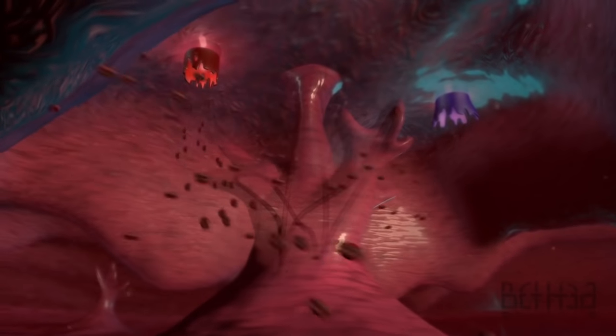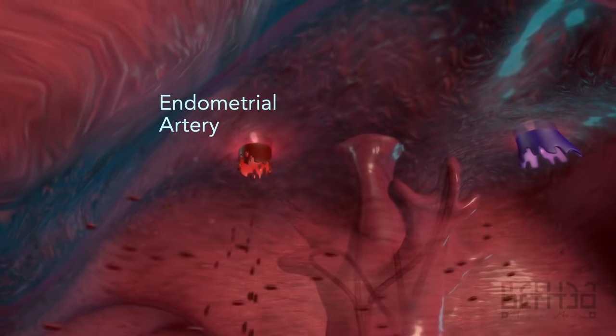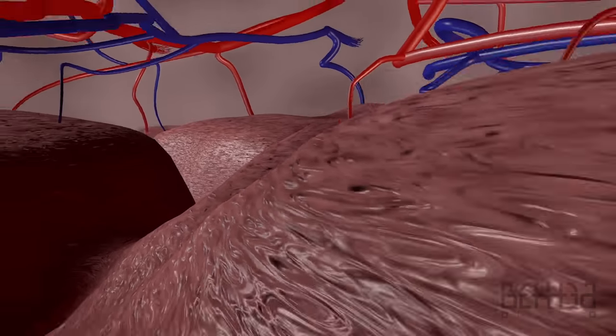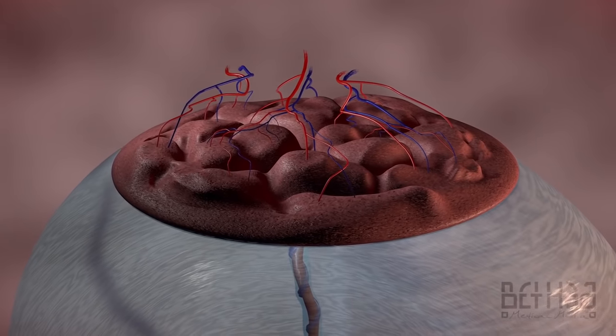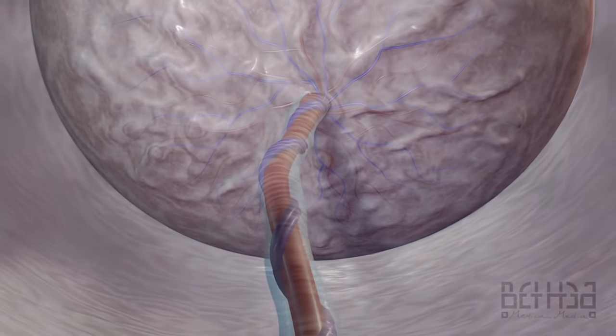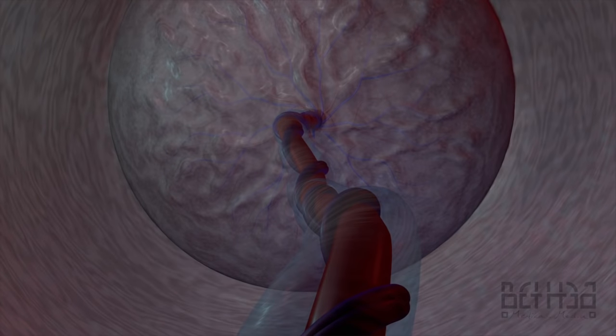Blood returns to the maternal circulation through endometrial veins, forced out by the pressure of incoming arterial blood. The placenta nourishes the fetus throughout development and is delivered shortly after parturition.